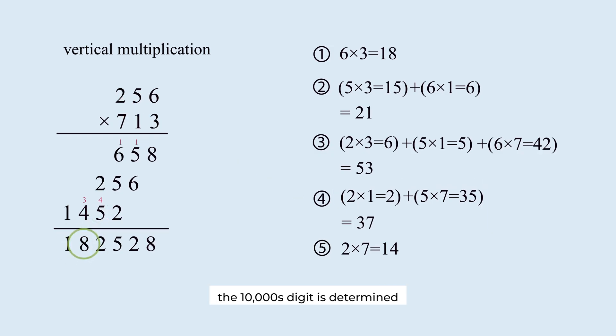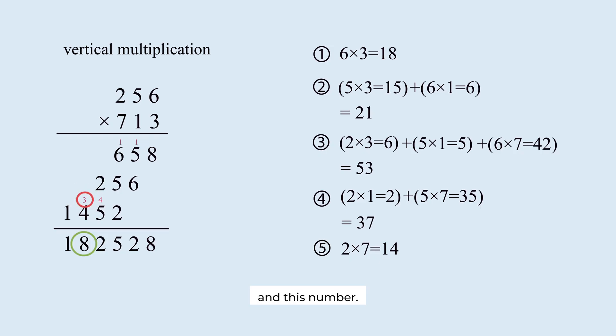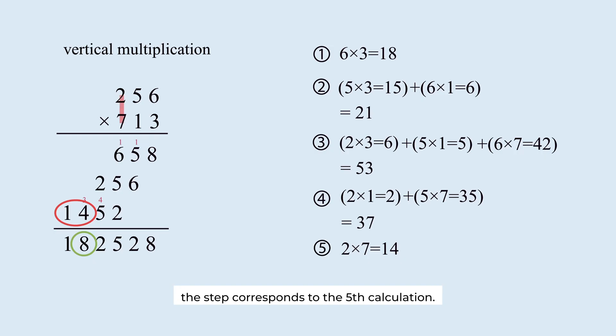The ten-thousands digit is determined by the carryover from the thousands digit and this number. You get this number by multiplying these numbers together. This step corresponds to the fifth calculation.